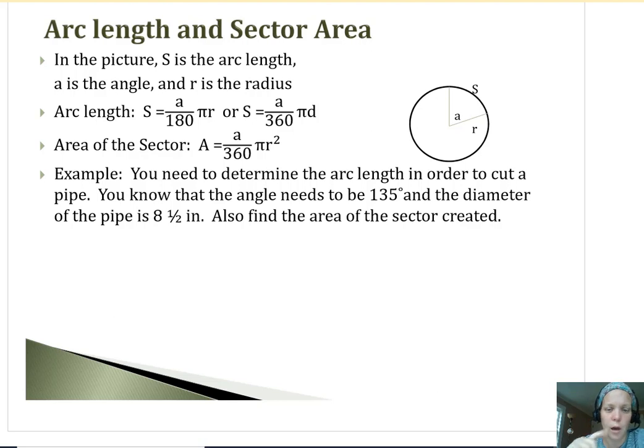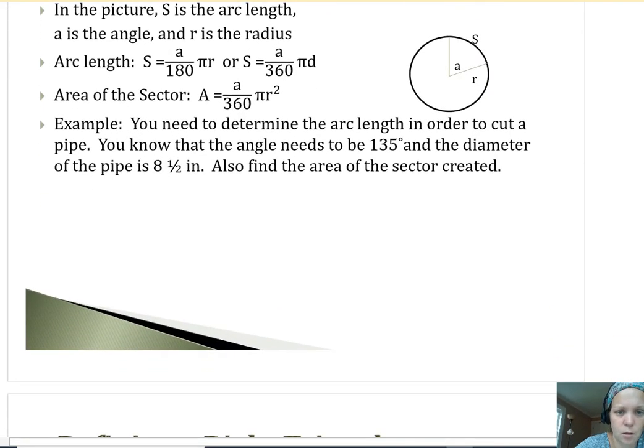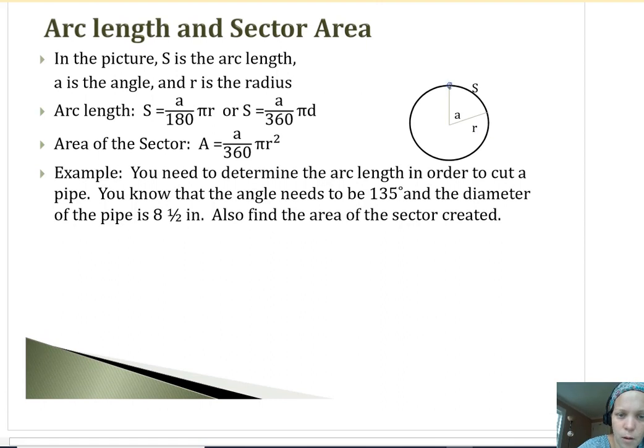So in this picture, the S—a lot of times we use S to denote the arc length. So the distance from this point to this point, that curve, that's the arc length. And we even did this in some of the geometry problems, but it was always like exactly half or exactly three quarters, and we can just multiply by half or multiply by three quarters or one quarter. So if we have different angles where it's not just perfect like that, we can use these formulas.